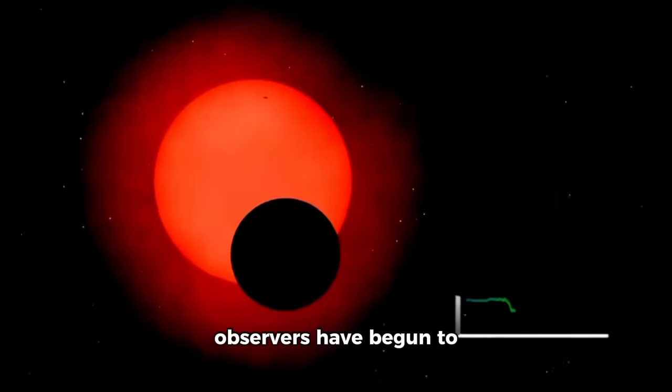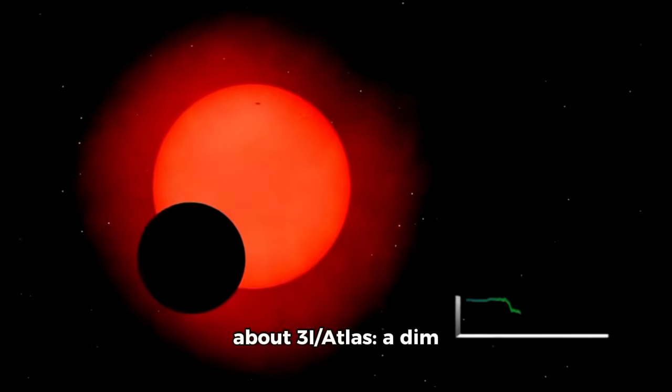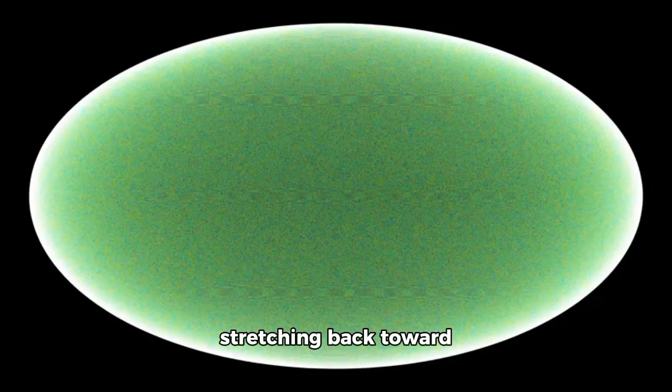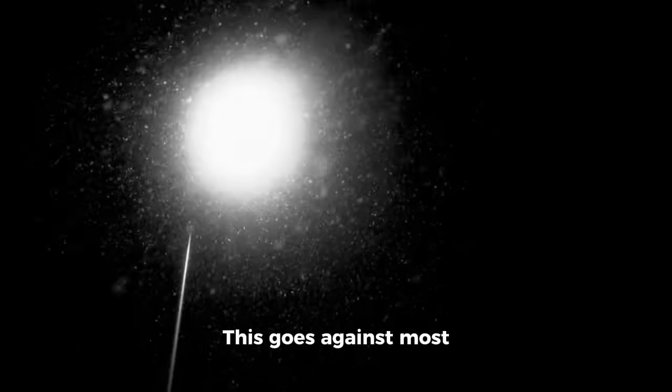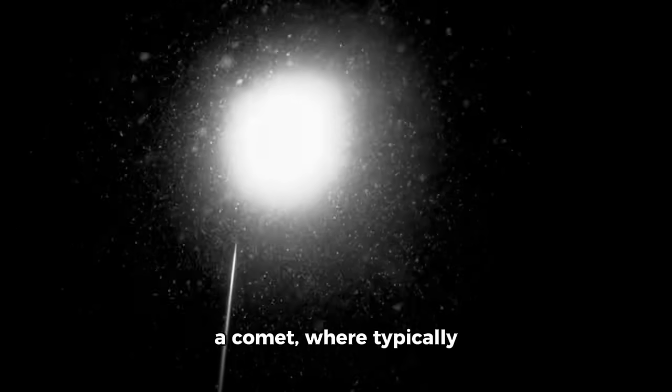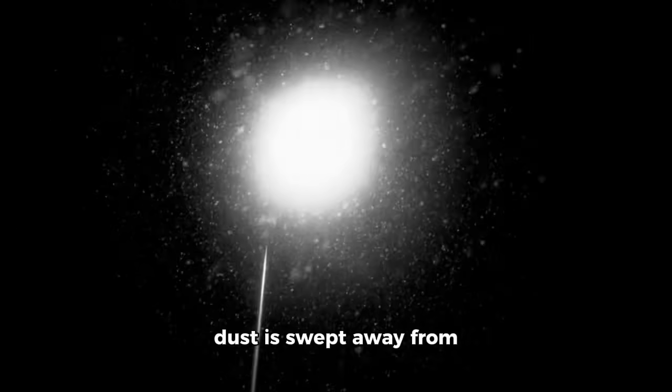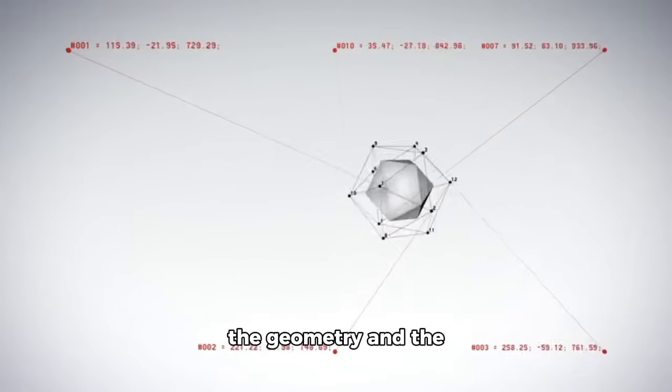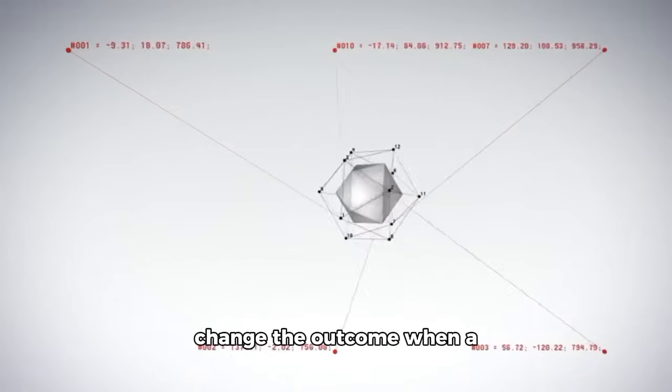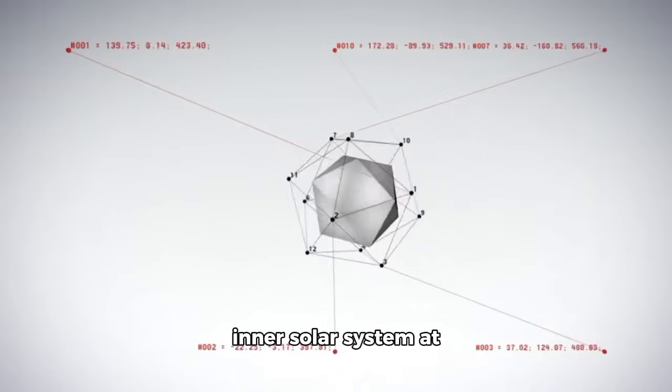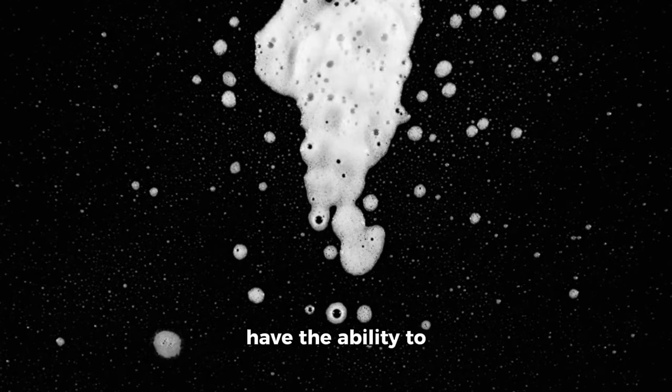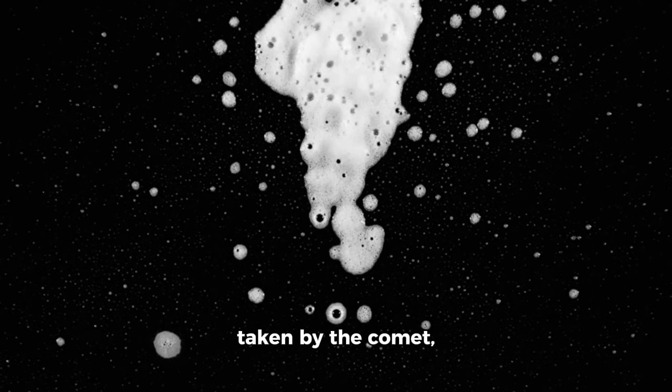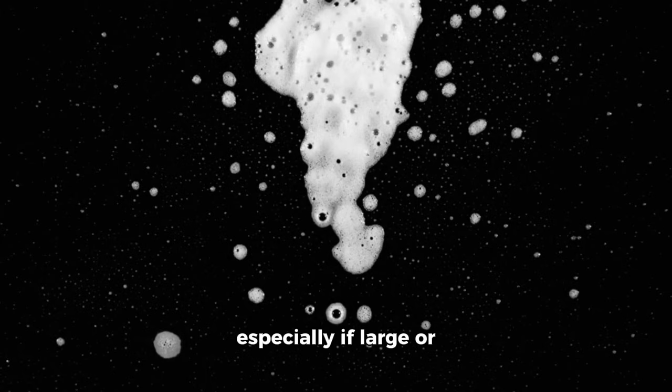A growing number of observers have begun to notice something strange about 3-I Atlas: a dim sunward feature stretching back toward the sun. This goes against most people's expectations of a comet, where typically dust is swept away from the sun by radiation pressure, forming a classic tail that points outward. For 3-I Atlas, however, the geometry and the physics are conspiring to change the outcome. When a comet races through the inner solar system at extreme speeds, dust grains ejected from the nucleus actually have the ability to advance along the path taken by the comet, especially if large or electrically charged.